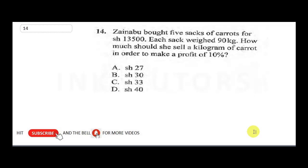Question 14 says Zainab bought 5 sacks of carrots for 13,500 shillings. Each sack weighed 90 kilograms. How much should she sell a kilogram of carrots in order to make a profit of 10%? So to solve this question, the first thing we need to do is establish, since Zainab bought 5 sacks for 13,500 shillings, let's establish what one sack will give.